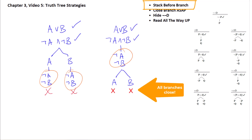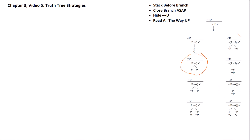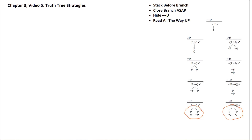In longer trees, stacking before you branch whenever you can is going to save you a fair bit of complexity. Anything equivalent to a conjunction — conjunction itself, a negated disjunction, or a negated conditional — is going to stack. Anything else — the disjunction itself, a negated conjunction, or a conditional — is basically a disjunction and will branch. For biconditional rules, they branch into two short stacks, so those are also essentially branching rules. Save branching for later whenever possible.